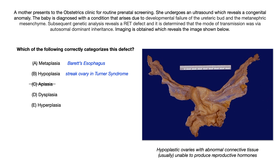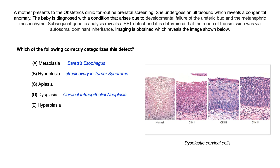So metaplasia is Barrett's esophagus, hypoplasia is streak ovary, and we've already talked about aplasia. For dysplasia, they're probably going to give you CIN — cervical intraepithelial neoplasia. The image might be a histological slide depicting cervical cells or cervical tissue, describing changes as they lead up to that pre-cancerous stage leading to cervical cancer. Dysplasia is abnormal or disordered cell growth that is usually pre-cancerous.